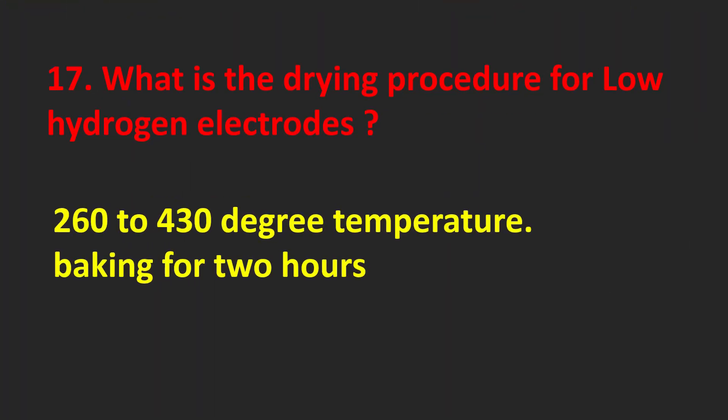What is the drying procedure for low hydrogen electrodes? 260 to 430 degrees temperature, baking for 2 hours.